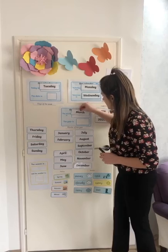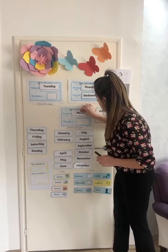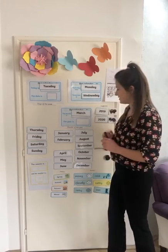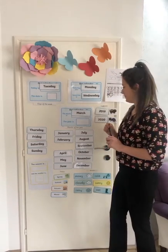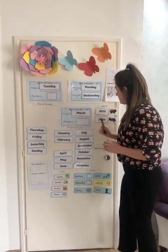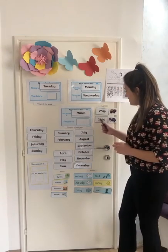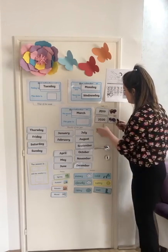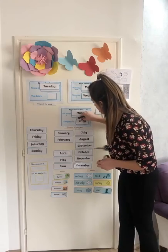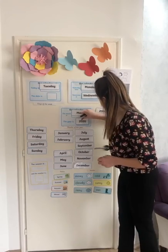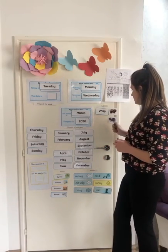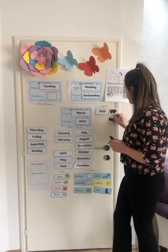We'll put March right here, and March starts with the sound M. The year is 2020. We'll put 2020 right here, and it's the year of the rat.